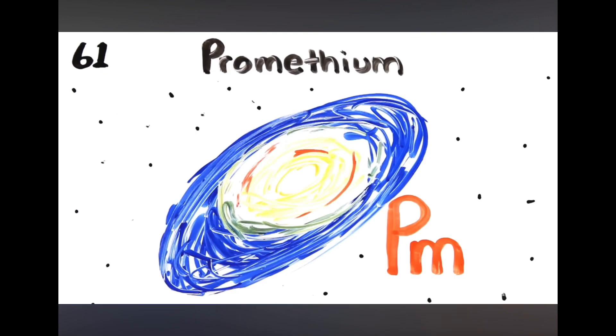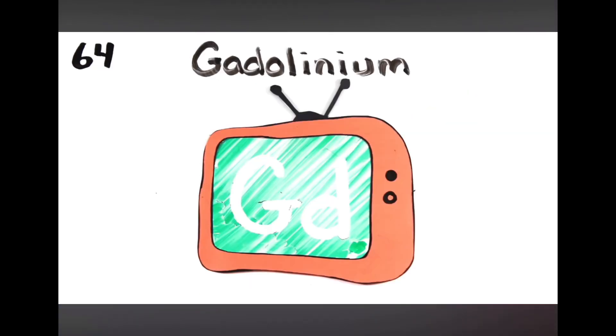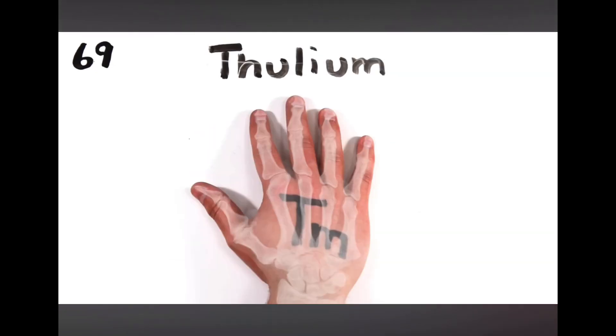Neodymium's next to promethium, then 62's samarium, europium, gadolinium and terbium, dysprosium, holmium, erbium, thulium, ytterbium, lutetium.